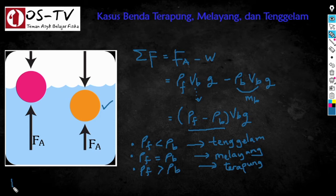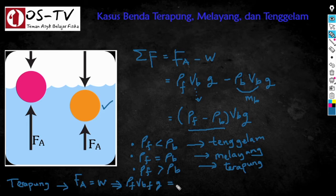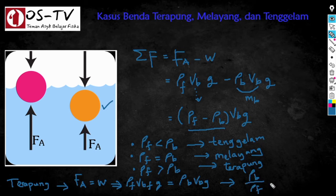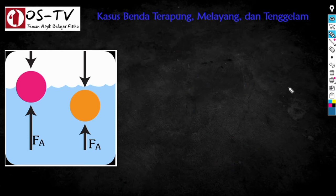Khusus untuk benda yang terapung, nilai ΣF = 0, sehingga gaya ke atas sama dengan gaya berat benda. Bila diuraikan: ρF × VBF × g = ρ benda × VB × g. Dengan mengeliminasi g, diperoleh persamaan ρB / ρF = VBF / VB. Persamaan ini dapat digunakan untuk menyelesaikan berbagai model soal terkait benda yang terapung di dalam suatu zat cair.